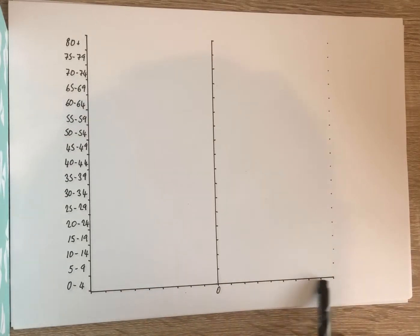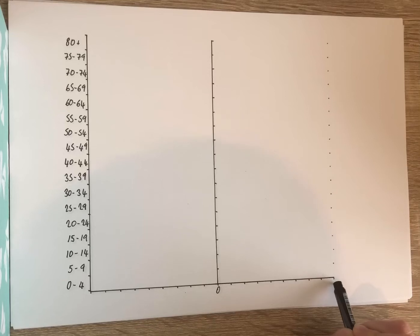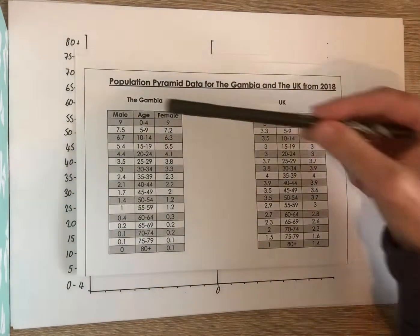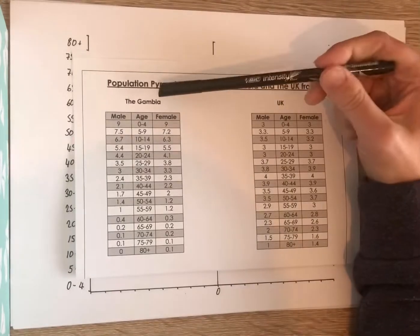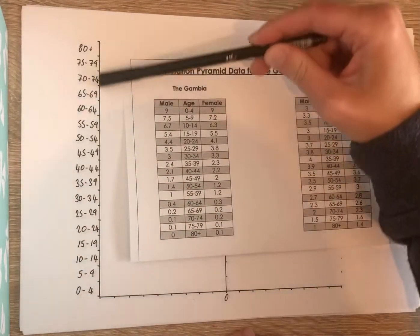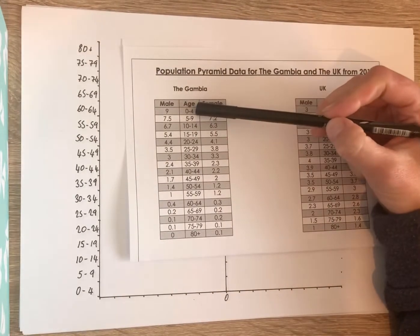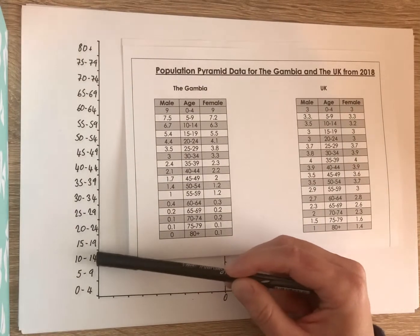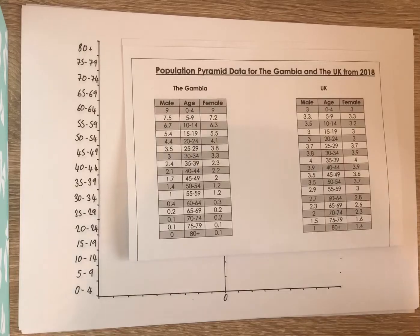On the x-axis of my graph, this is going to represent the percentage of people within each age group within my total population. So I've got one line going off to the right representing the females, one line going off to the left representing the males. Now I need to look at my raw data. The age groupings are going to go up the y-axis on the left hand side of your graph. The age groupings 0 to 4, 5 to 9, 10 to 14 should start at the bottom and go up your graph. Each one should sit within a one centimetre bar because this is basically a bar graph but turned sideways.